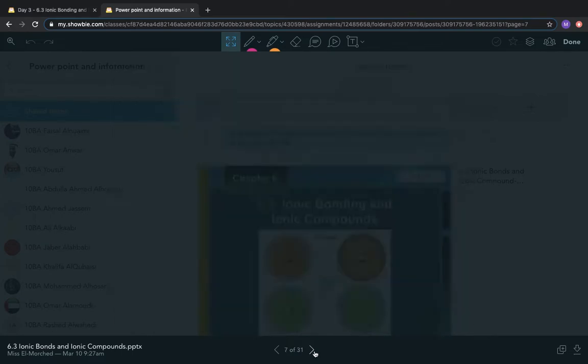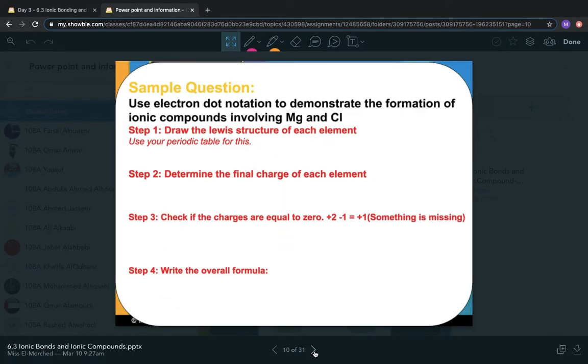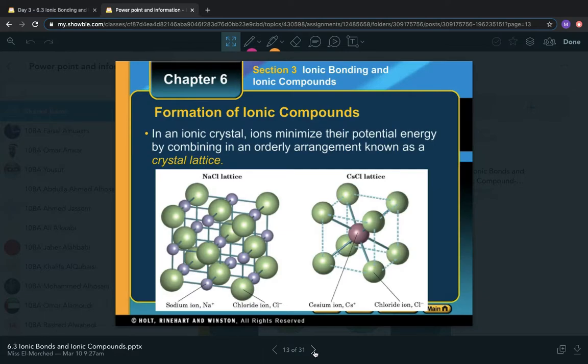Today we're going to talk about why they do that. The first thing you need to know is this is called a crystal lattice. When they all come together, they form this perfect arrangement of molecules. The reason they do this is because it helps them gain stability. Atoms and elements are always trying to reach a low potential energy state.